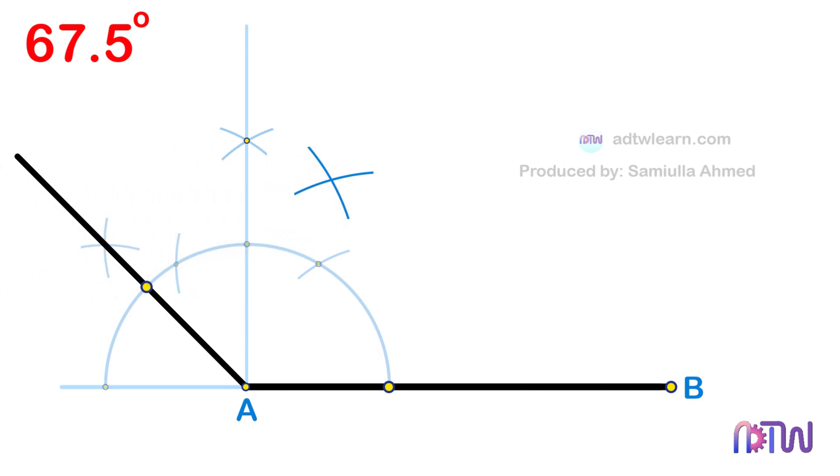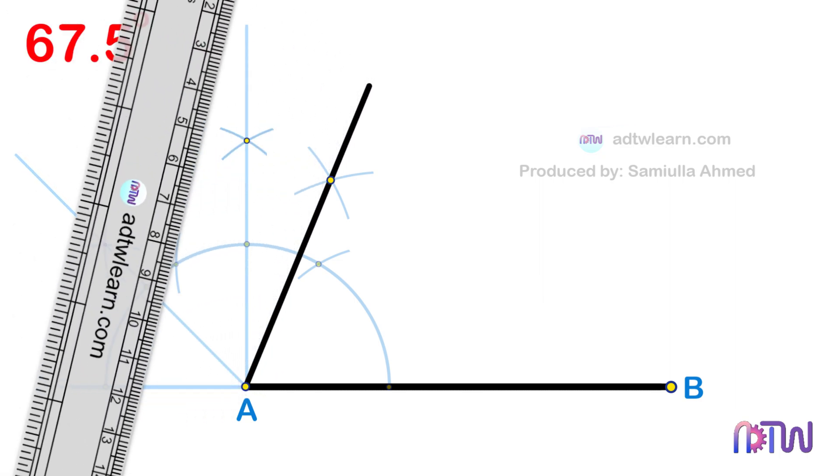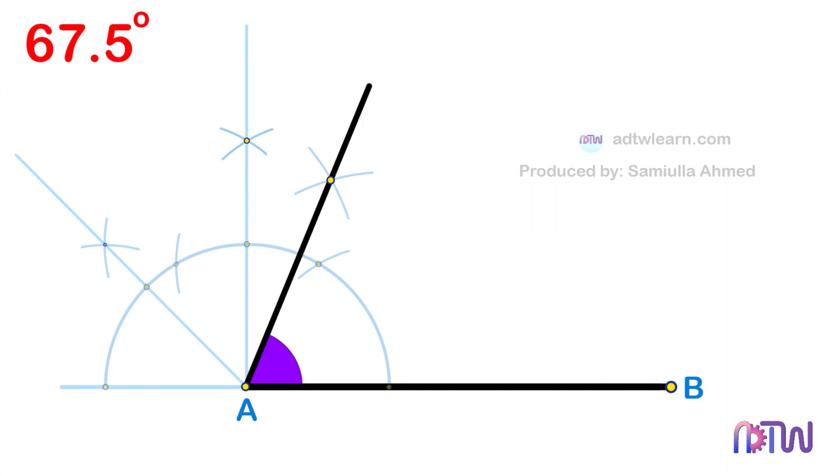In the end, draw a line passing through this intersection point from the endpoint A of the line segment. Therefore, the angle made by this line with the horizontal line is 67.5 degrees.